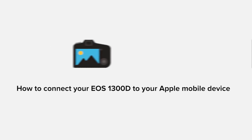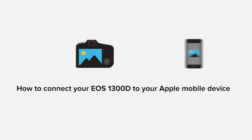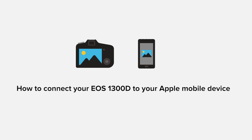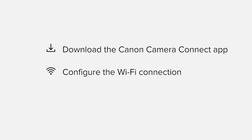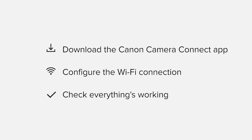In this video, we'll take you through the steps required to connect your Apple iPhone or iPad to the Canon EOS 1300D. We'll start by downloading the Canon Camera Connect app from the Apple App Store before configuring the Wi-Fi connection. Finally, we'll go through the basic features of the app and make sure that everything's working as it should. It'll take about five to ten minutes to get up and running.